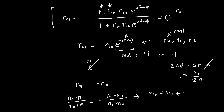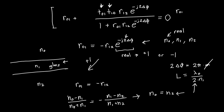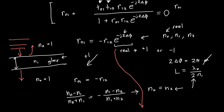So if n0 = n2 and L = λ0/(2n1), we get perfect destructive interference — zero reflection. A common practical case is a glass plate suspended in air: both n0 and n2 equal 1 (air), and if the glass film thickness equals half a wavelength in the glass, we get zero reflection. It's as if the film isn't even there — total transmission through the glass slide.